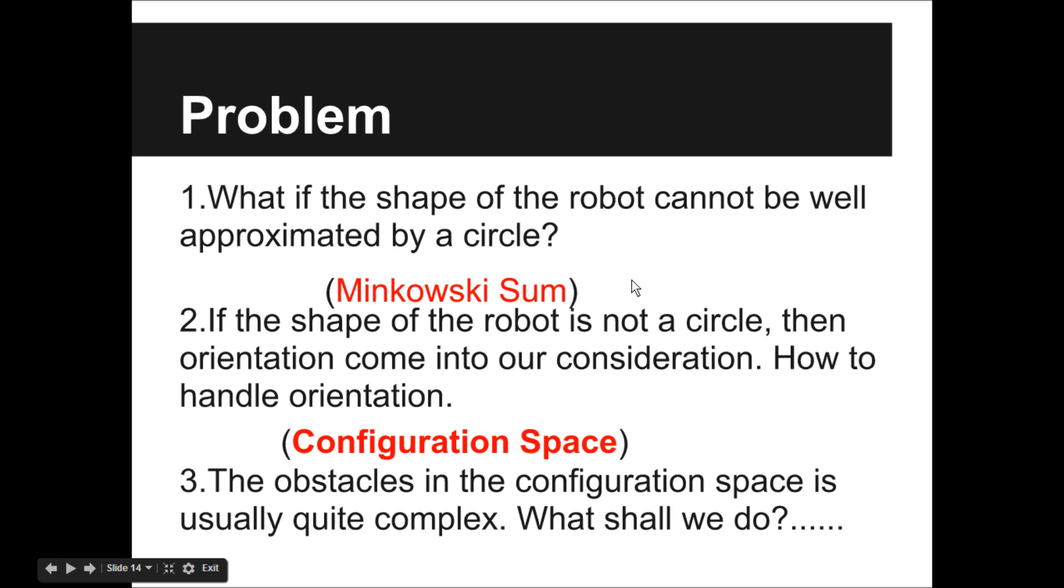The answer is to transform our problem to the configuration space. You can also search Wikipedia to see what configuration space is. Then, if you know what configuration space is, you'll notice that the obstacles in the configuration space are usually quite complex. What shall we do? I don't have an answer yet, but the direction I'm looking at now is the probabilistic roadmap approach.